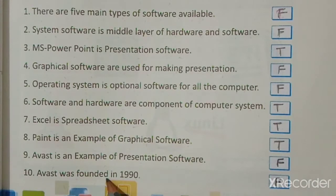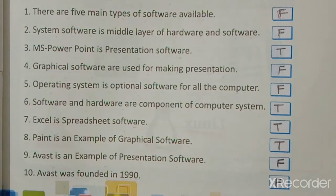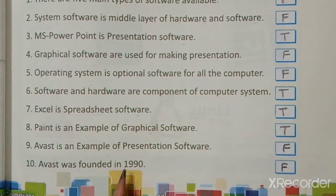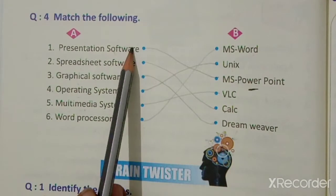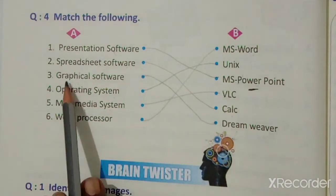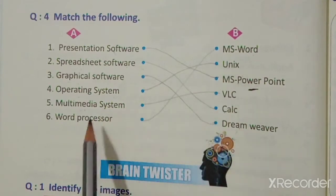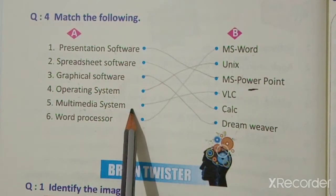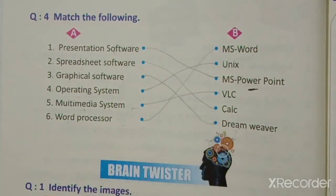Continuing true or false: Operating system is optional software for all computers — False. Software and hardware are components of a computer system — True. Excel is spreadsheet software — True. Paint is an example of graphical software — True. Avast is an example of presentation software — False; it is utility software. Question four, match the following: Presentation Software — MS PowerPoint; Spreadsheet Software — Calc; Graphical Software — Dreamweaver; Operating System — Unix; Multimedia System — VLC; Word Processor — MS Word.